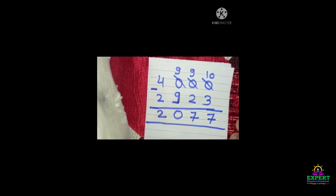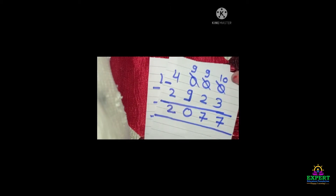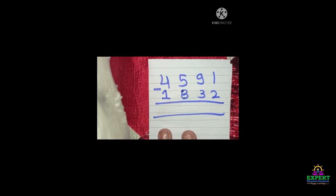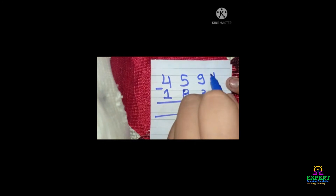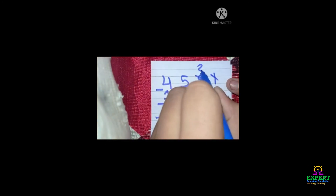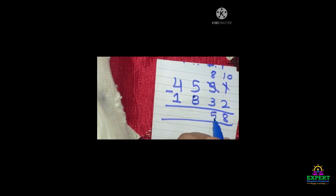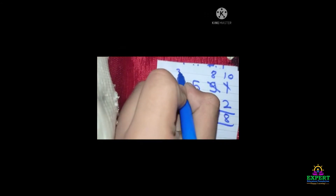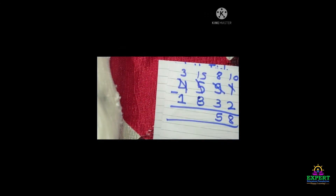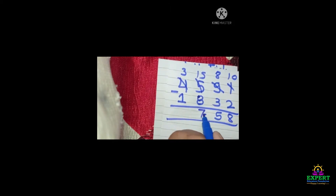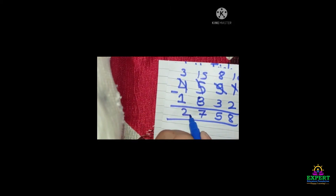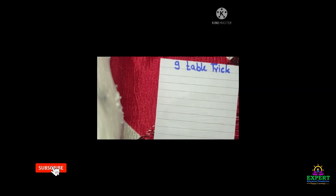So we write here 2, and this is the answer. Next, every time it can't come 0 at the last, so you have to cut it — cut here 8 and here 10. So 10 minus 2 is 8, then 8 minus 3 is 5, then 5 can't do, so here 3 becomes 15. 15 minus 8 is 7, and 3 minus 1 is 2.